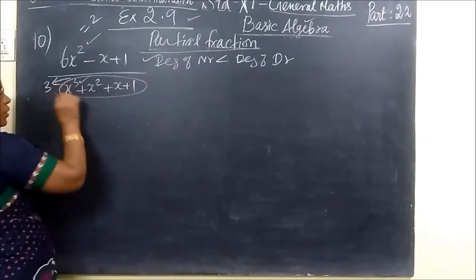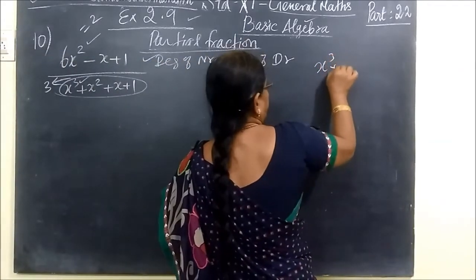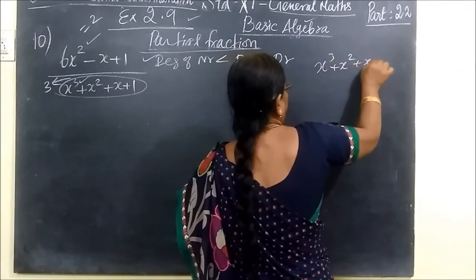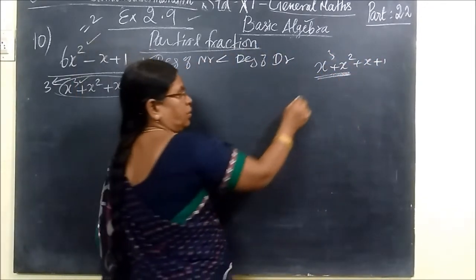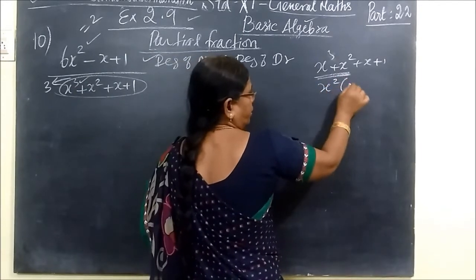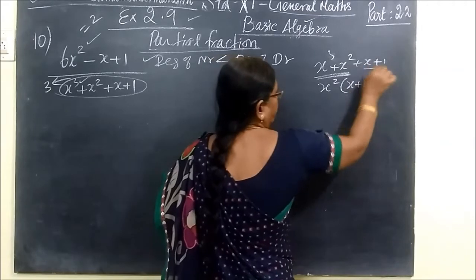If you have denominator with clear, we will simply apply. You can say x² and x plus 1 is clear. Now take first 2 terms. What is the common? x² is common. So x² is common, x plus 1.